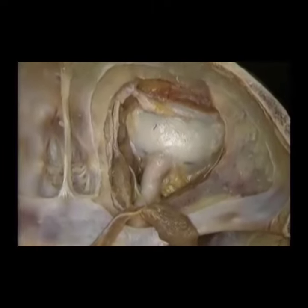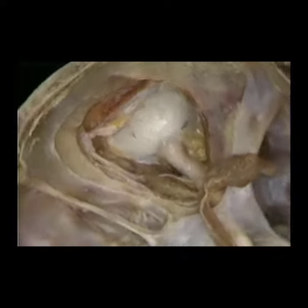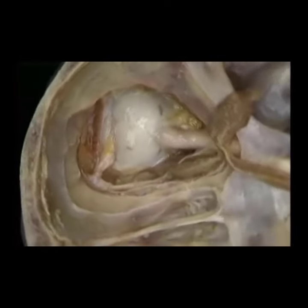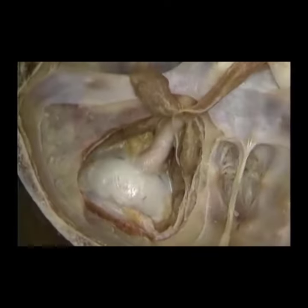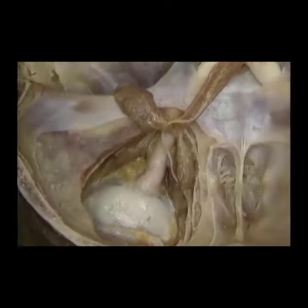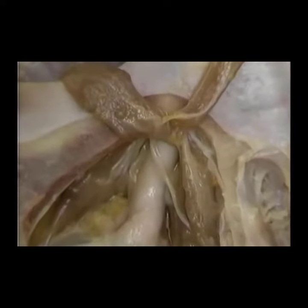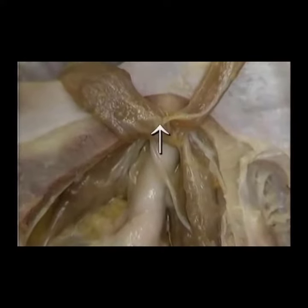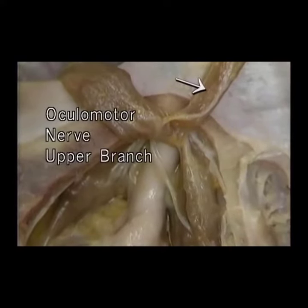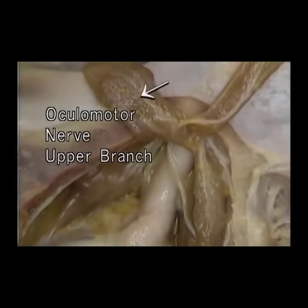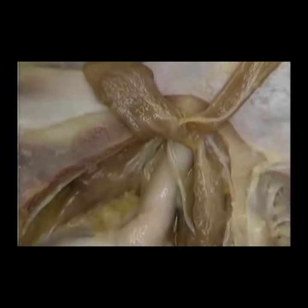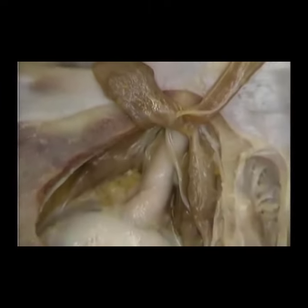We'll go round to a front view to see the nerves better. The ocular motor nerve divides into an upper and lower branch. Here's the upper branch supplying the levator palpebrae superioris and superior rectus muscles.